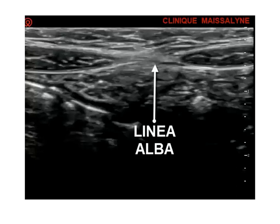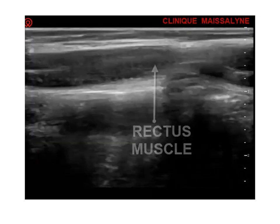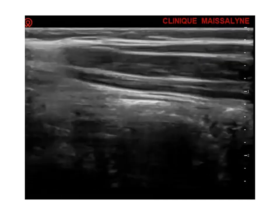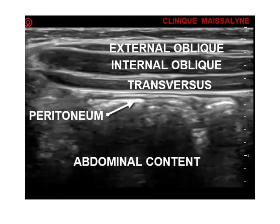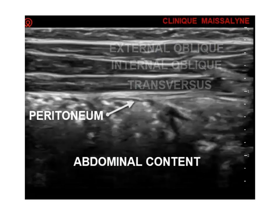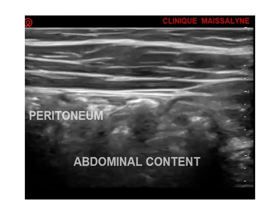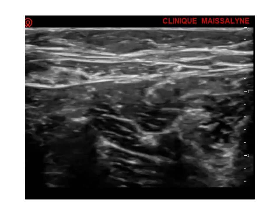The ultrasound transducer is then moved laterally along the midaxillary line. The three muscles are then identified. Identify the abdominal wall muscle layers: skin, subcutaneous tissue and fat, rectus abdominis muscle, external oblique muscle, internal oblique muscle, transversus abdominis muscle, transversalis fascia, preperitoneal fat, peritoneum, and abdominal content.